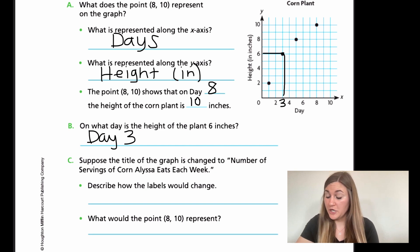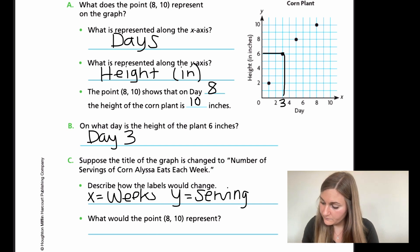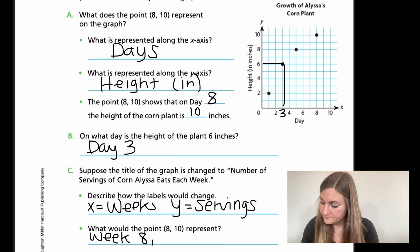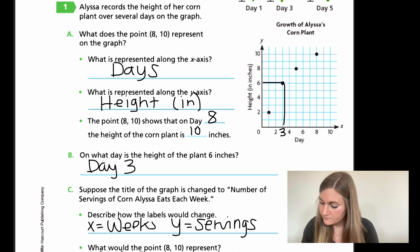For C, suppose the title of the graph is changed to number of servings of corn Alyssa eats each week. So now it's number of servings, not the height. And now instead of days, it's by weeks. Describe how the labels would change. The x would now say weeks and the y is now going to say servings. In this changed graph, what would the point (8,10) represent? 8 is now weeks, so week 8, and the up and down is now servings, so she ate 10 servings of corn.